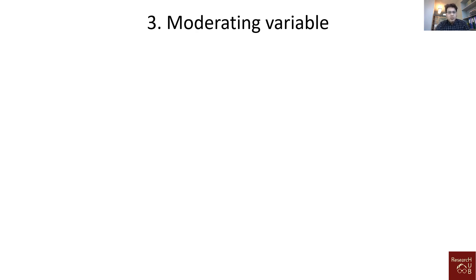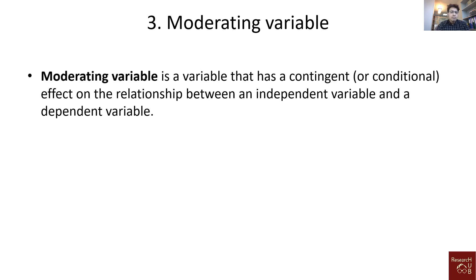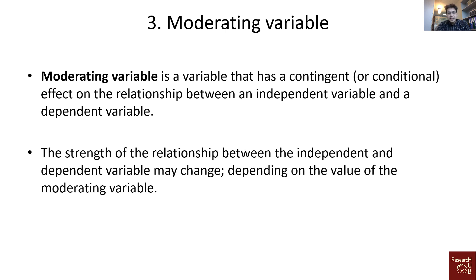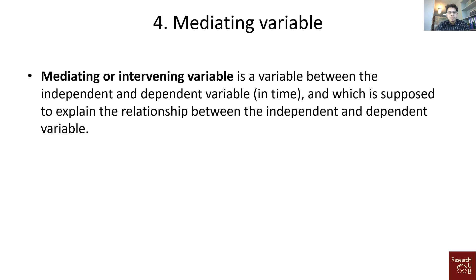A moderating variable is a variable that has a contingent or conditional effect on the relationship between an independent variable and a dependent variable. The strength of the relationship between the independent and the dependent variable may change depending on the value of the moderating variable. This is the role of the moderating variable — it impacts the relationship between the independent and dependent variable.